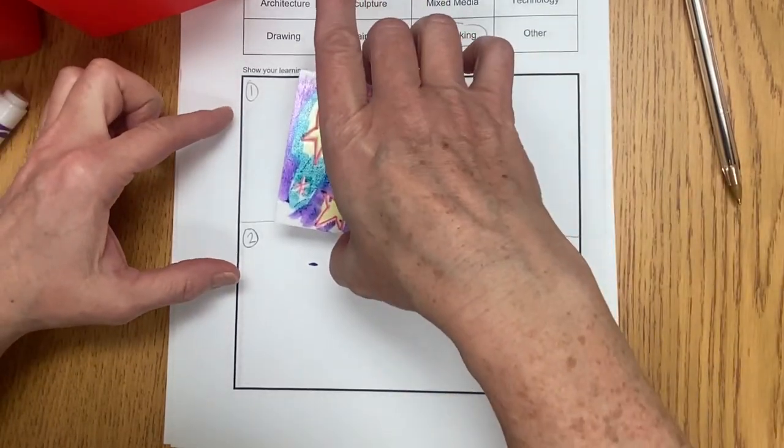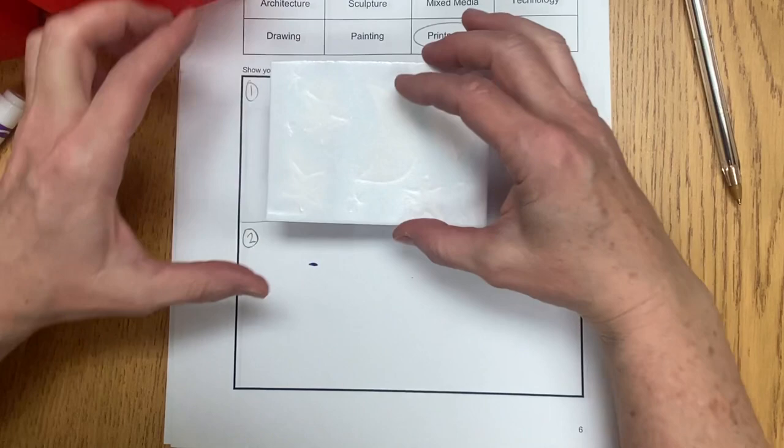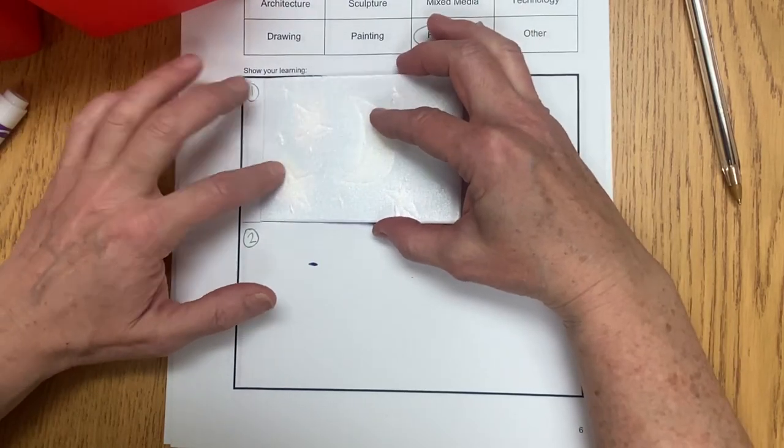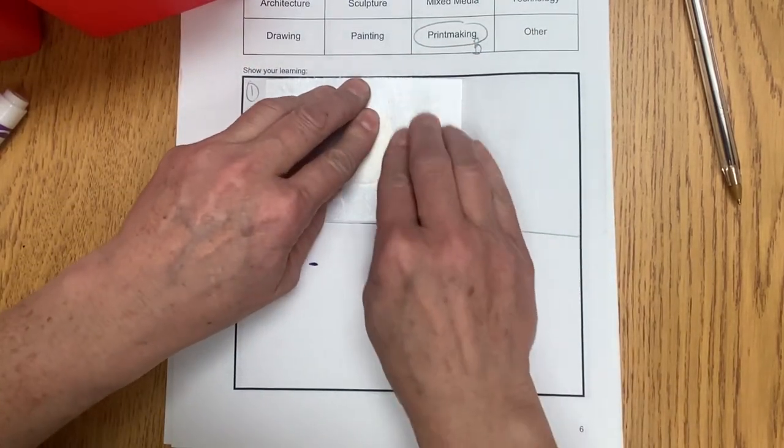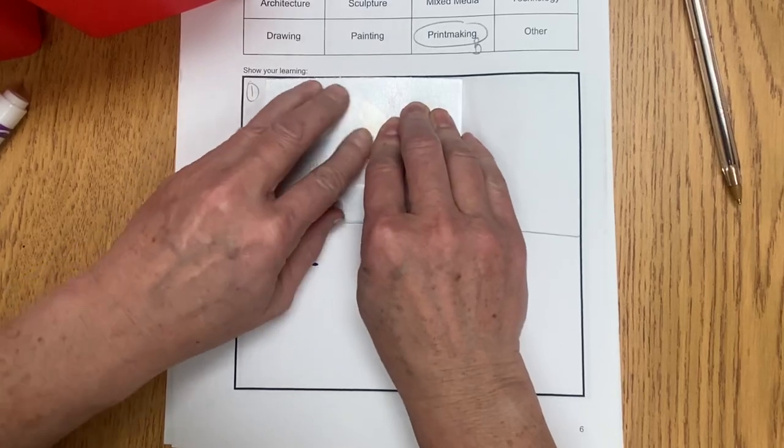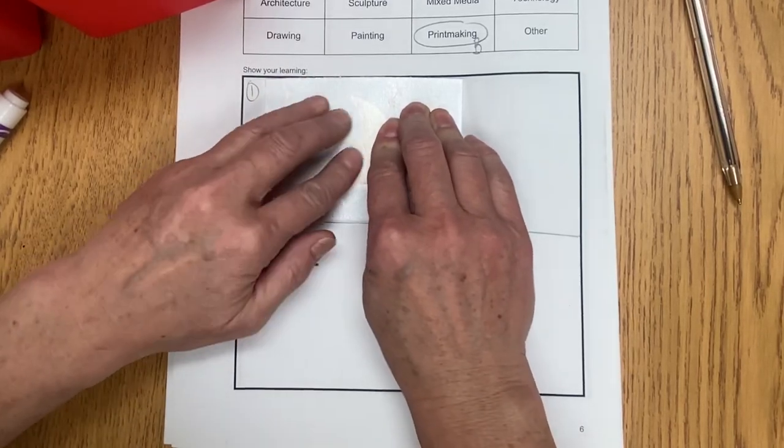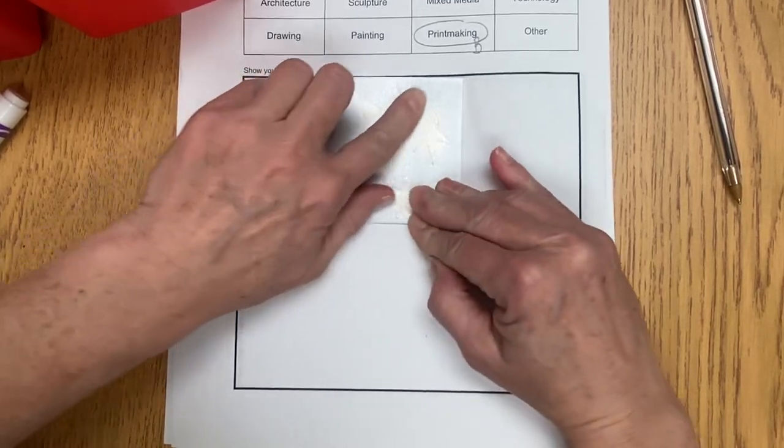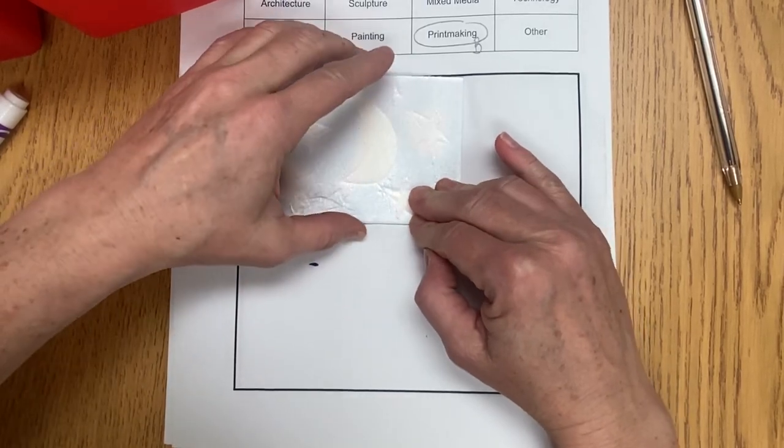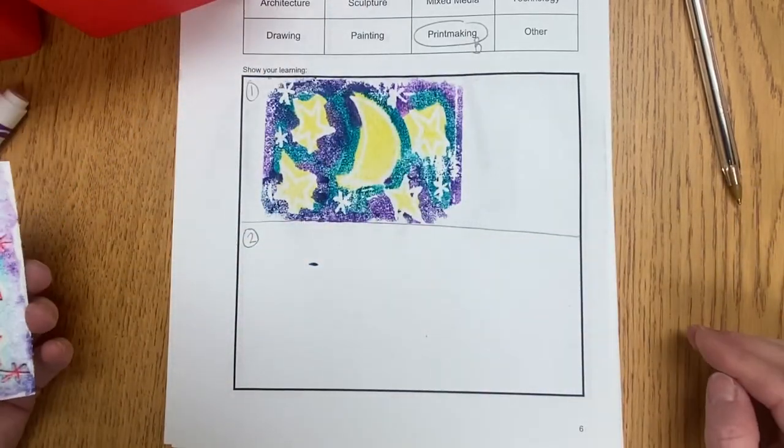Then I'm going to so carefully take my stamp, turn it over, place it where I would like to make my imprint. Rub, rub, rub. Oh, it's just like glue. This is me like you, yes, yes. Lift it off carefully. Pretty good.